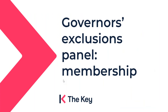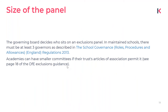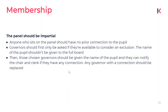We're going to call it a governor's exclusion panel, but you might also hear it referred to as a disciplinary committee or a behavior panel. The name varies from school to school, but it all means the same thing: a small group of governors delegated the duty to consider whether an exclusion was wrongful. Any member of the panel should be impartial — they don't know the pupil or know the circumstances around the exclusion, and they haven't discussed it with staff or the headteacher.